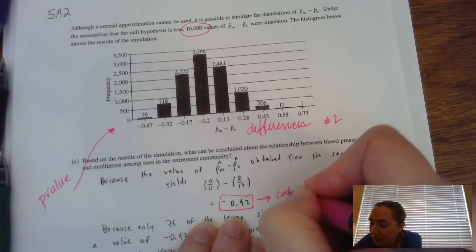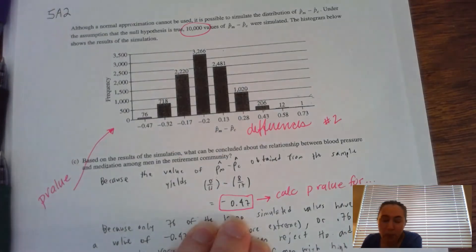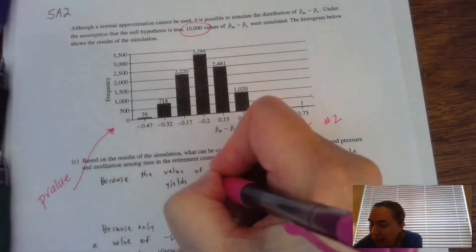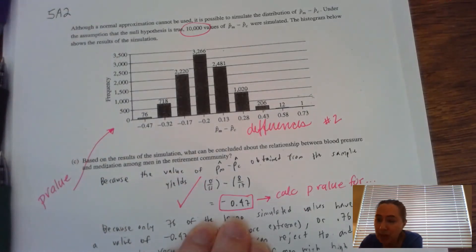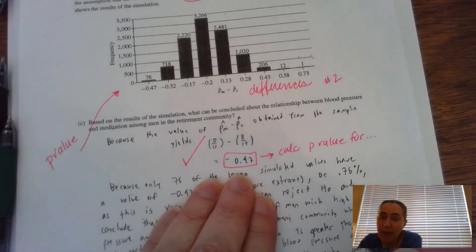So in this particular sample that was given in part B, zero out of the 11 men that meditated had blood pressure minus eight out of the 17 men had high blood pressure in group number two, which means that this thing right here is the value that we want to calculate the P value for. So that's what we need to do. So the very first check mark is, did you realize that you had to figure out what that sample difference was for our particular result?